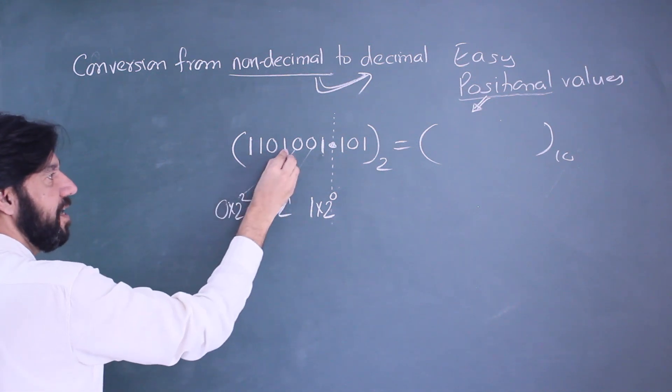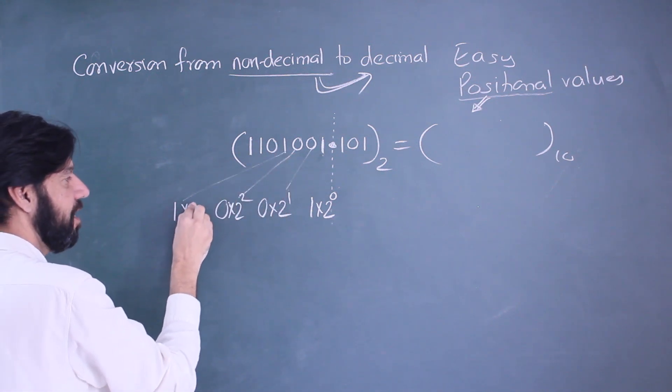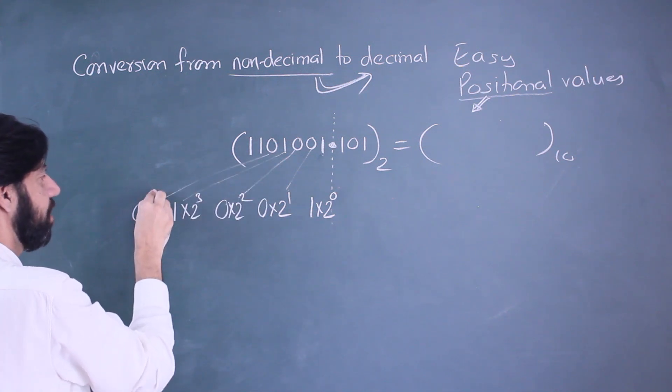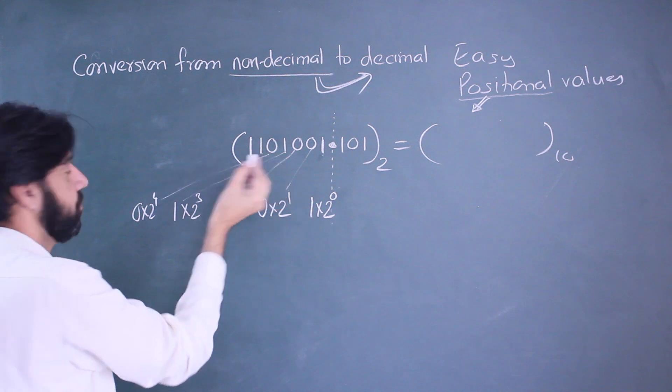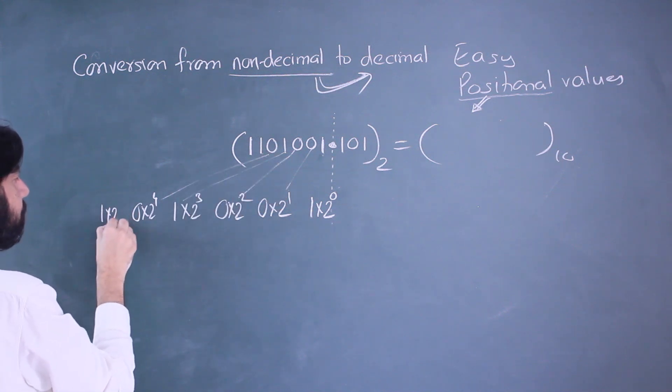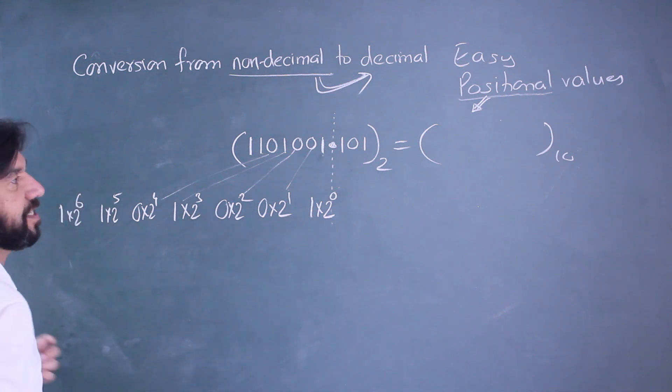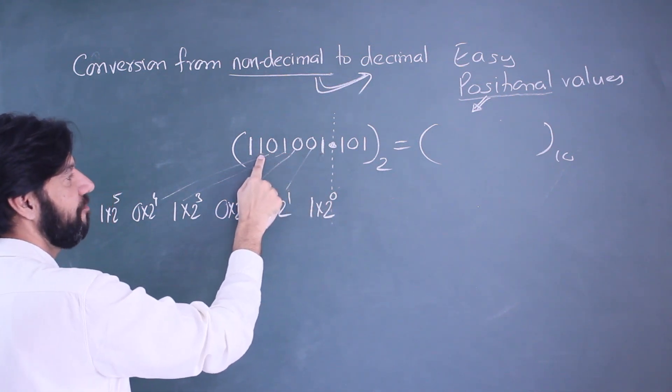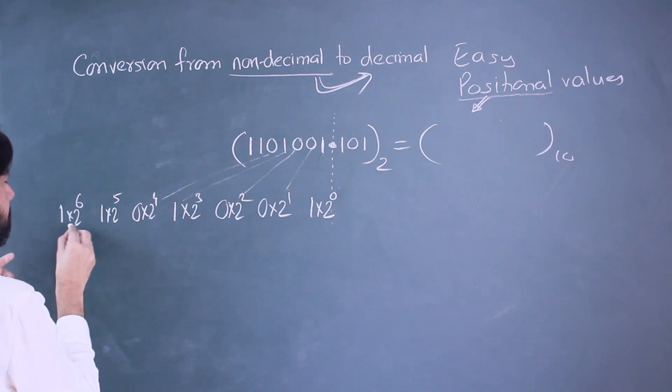The zero is going to be zero into two raised to one. The next zero is zero into two square. Then there's a one, so that will be one into two cube. A zero into two raised to four. There are two ones, so one into two raised to five and one into two raised to six.